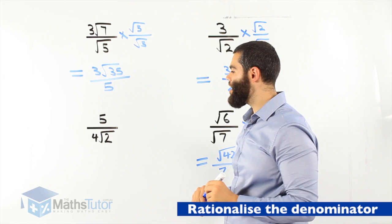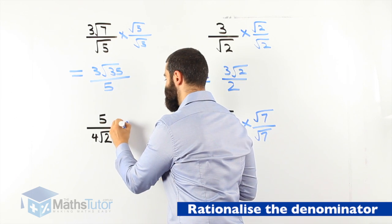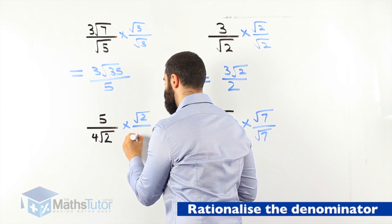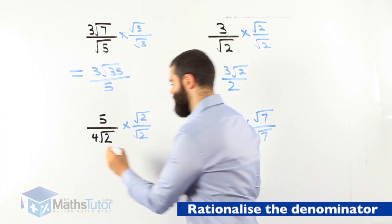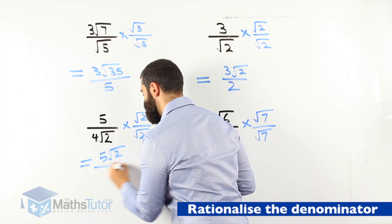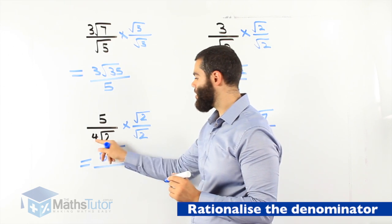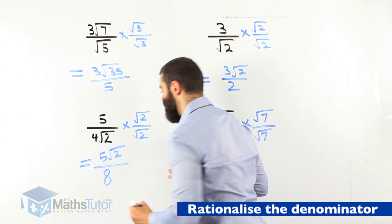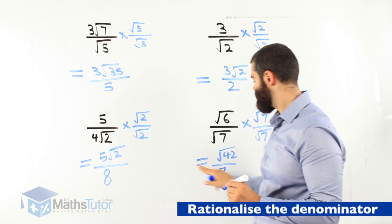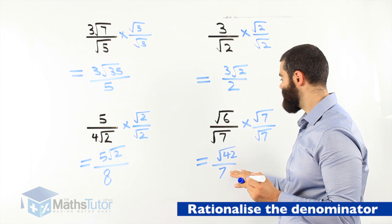Next one: 5 over 4 root 2. We have a surd in our denominator, so we multiply by the surd only — root 2 over root 2. So 5 times root 2 is 5 root 2. For the denominator: root 2 times root 2 is 2, and 2 times the 4 is 8. So our answer is 5 root 2 over 8. We have made the denominator a rational number. If you put root 42 over root 7 into your calculator, it's exactly the same value as root 6 over root 7, but written with a rational denominator.